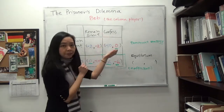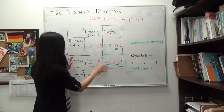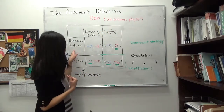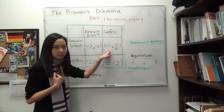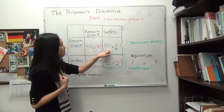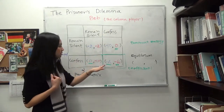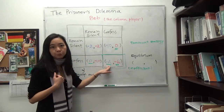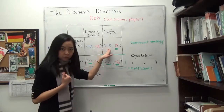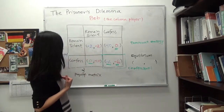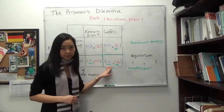What if Bob chooses to confess? Then given that Bob confesses, if Alice chooses to be silent, that's 10 years in prison — I don't want that. But given that he confesses, if I also confess, I only get 6 years in prison. So 6 years in prison is better than 10 years in prison. So Alice will again choose to confess, given Bob chooses to confess.